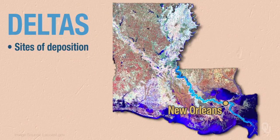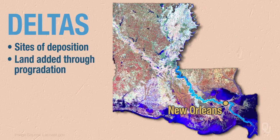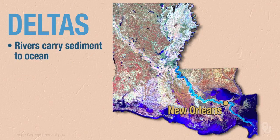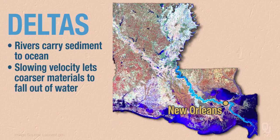Deltas are sites of deposition, or sites of progradation, where we add land. What happens is that sediment is being carried in the river. When the river enters the ocean, it deposits sediment. Why? Because the velocity slows down. When the velocity slows down, the coarser material falls out of the water and you get deposition.